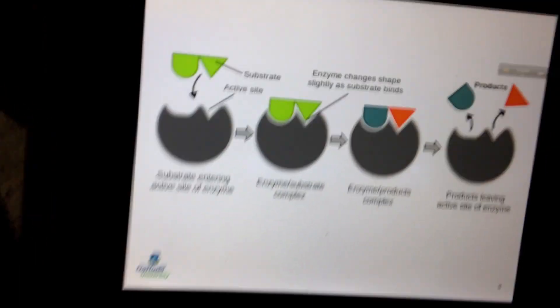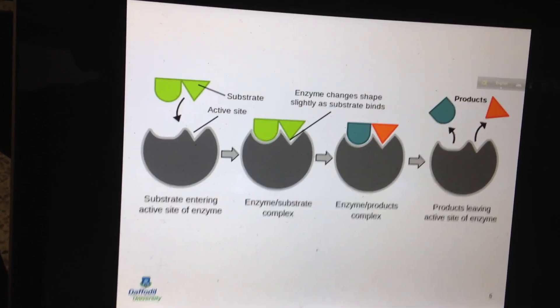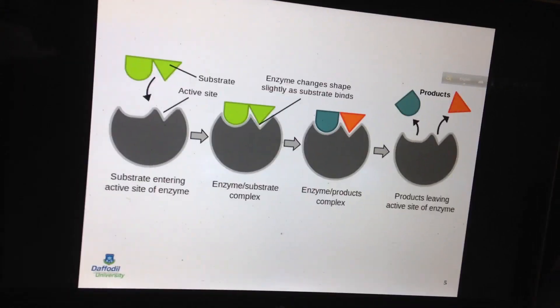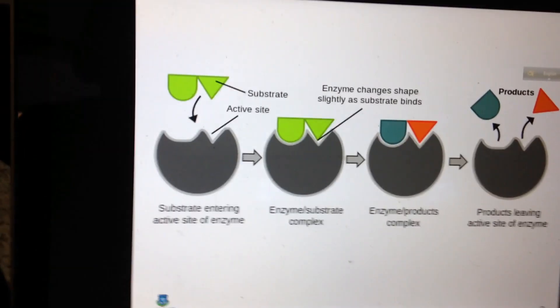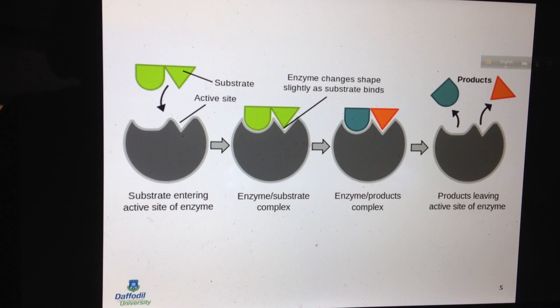If you look at this figure, you can find the active site. The substrate comes to the active site and binds onto it, which lowers the potential energy. Due to binding, it forms a new potential energy diagram — upon binding they lose some energy, and then the reaction proceeds.